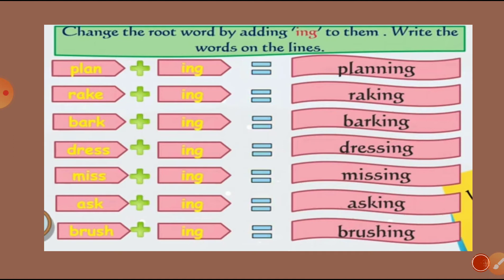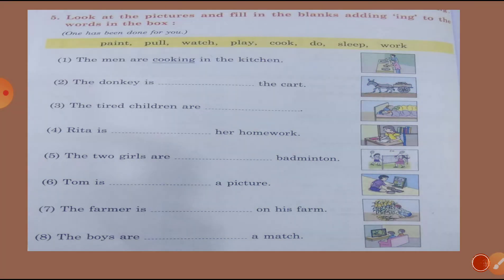Miss plus ING equals missing. Ask plus ING equals asking. Brush plus ING equals brushing. Now next, look at the pictures and fill in the blanks by adding ING to the words in the box. The words given are: paint, pull, watch, play, cook, do, sleep, work. One has been done for you.